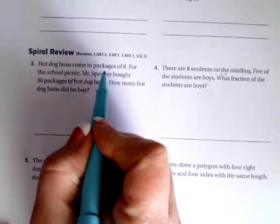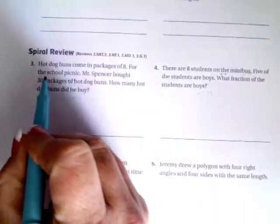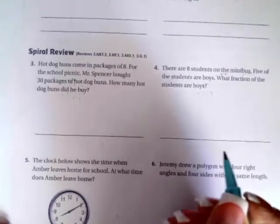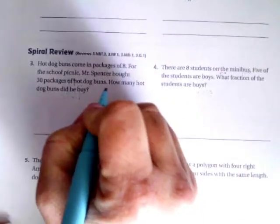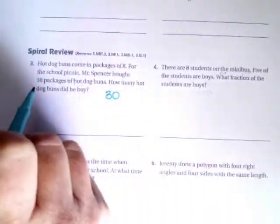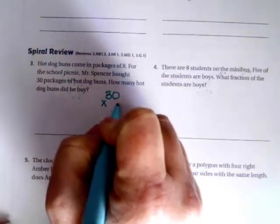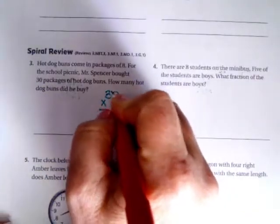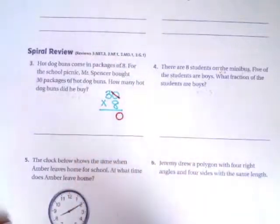Hot dog buns come in packages of eight. For the school picnic, Mr. Spencer bought 30 packages of hot dog buns. How many hot dog buns did he buy? So 30 packages, and there are eight in each package. I'm going to give you a little trick here and tell you that you can take that zero right off and put it on the end.